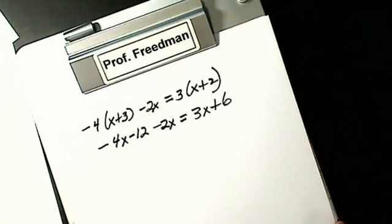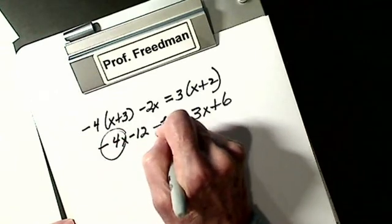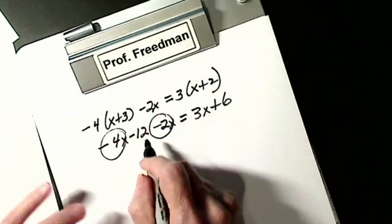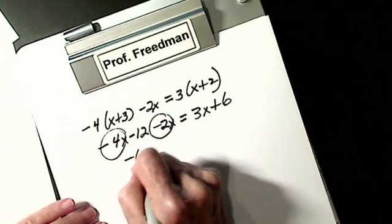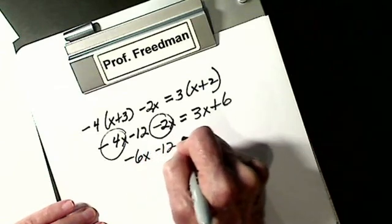Step 2: combine like terms on the same side of the equal sign. Step 3: the signs are like — add and take the same sign.